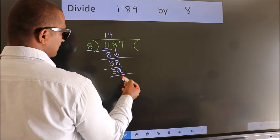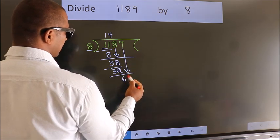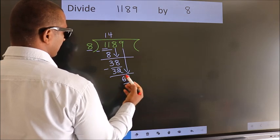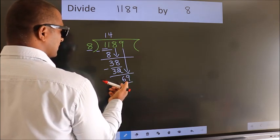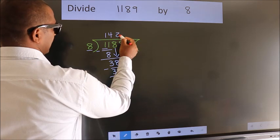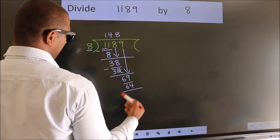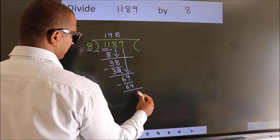After this, bring down the beside number. So, 9 down. So, 69. A number close to 69 in the 8 table is 8 eights 64. Now, we subtract. We get 5.